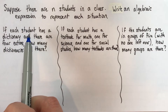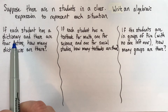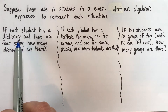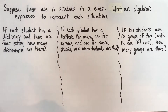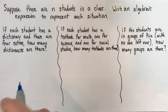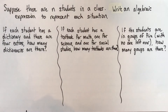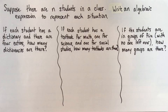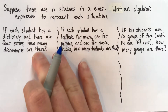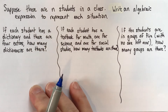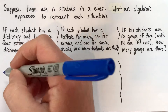So first of all, suppose that each student has a dictionary, and there are four extra dictionaries in case somebody forgets theirs. The question is: how many dictionaries are there all together? Here's how you can go about thinking about this.